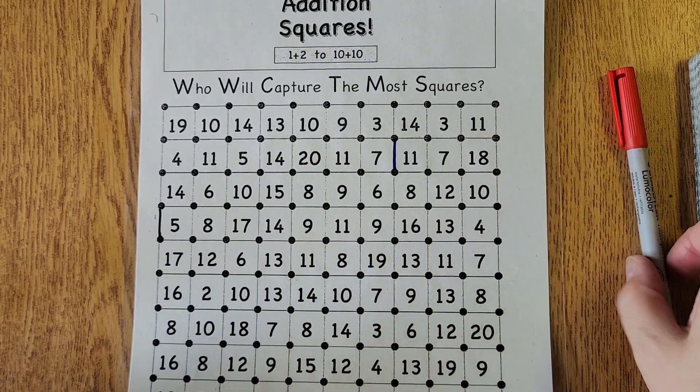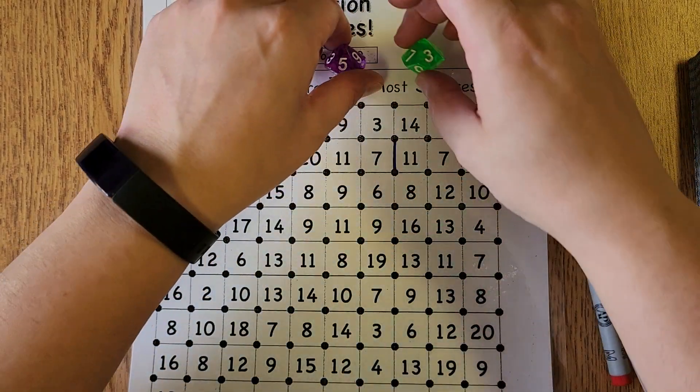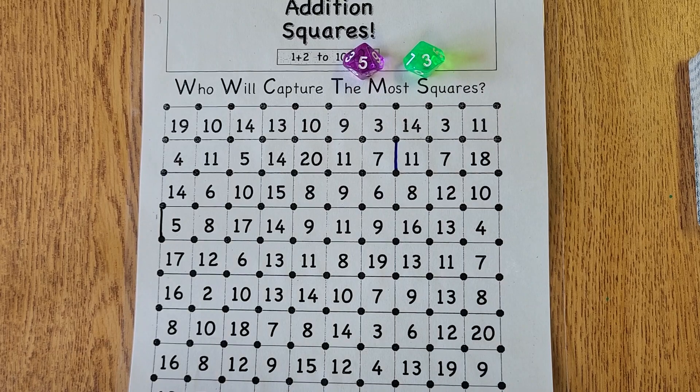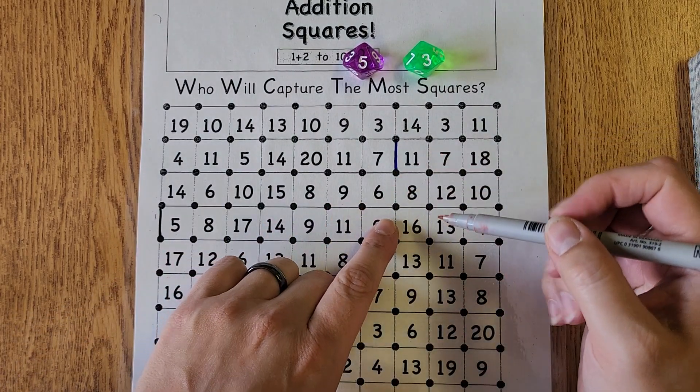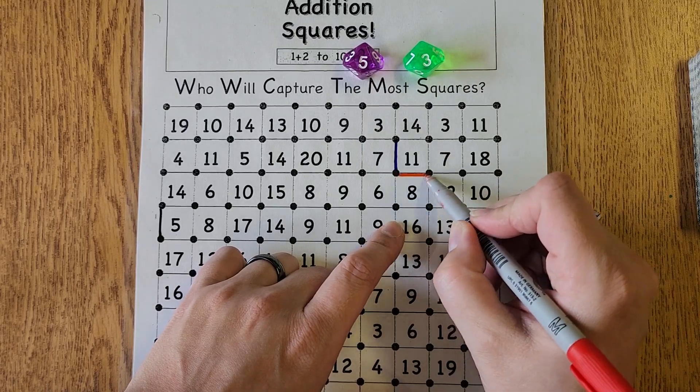The other person's turn, the red player, they're going to roll the dice as well. Five plus three makes eight. They're going to find an eight. This eight is connected to the eleven that I just drew so they might want to put theirs there.